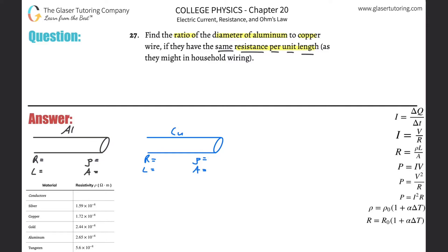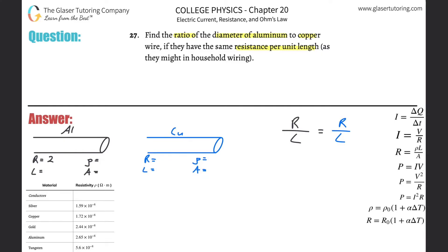What that basically means is that the ratio of resistance R to length L is going to be the same for each wire. That doesn't necessarily mean the resistance of the aluminum and copper wires are the same, or that the lengths are the same — it means the ratios are the same. For example, aluminum could have resistance 20 and length 2, while copper has resistance 10 and length 1; both ratios equal 10.